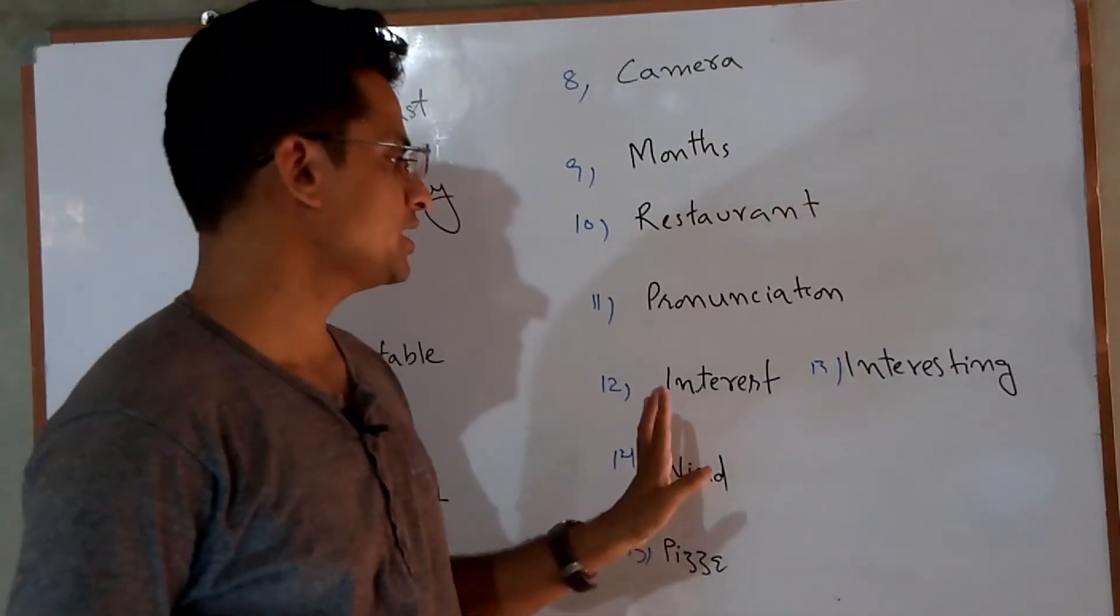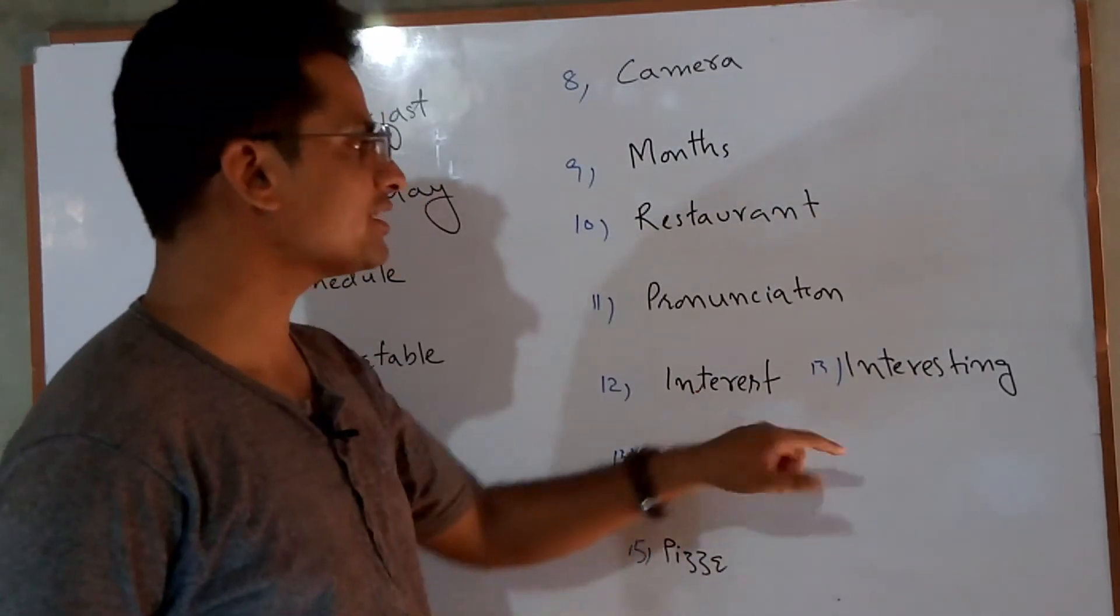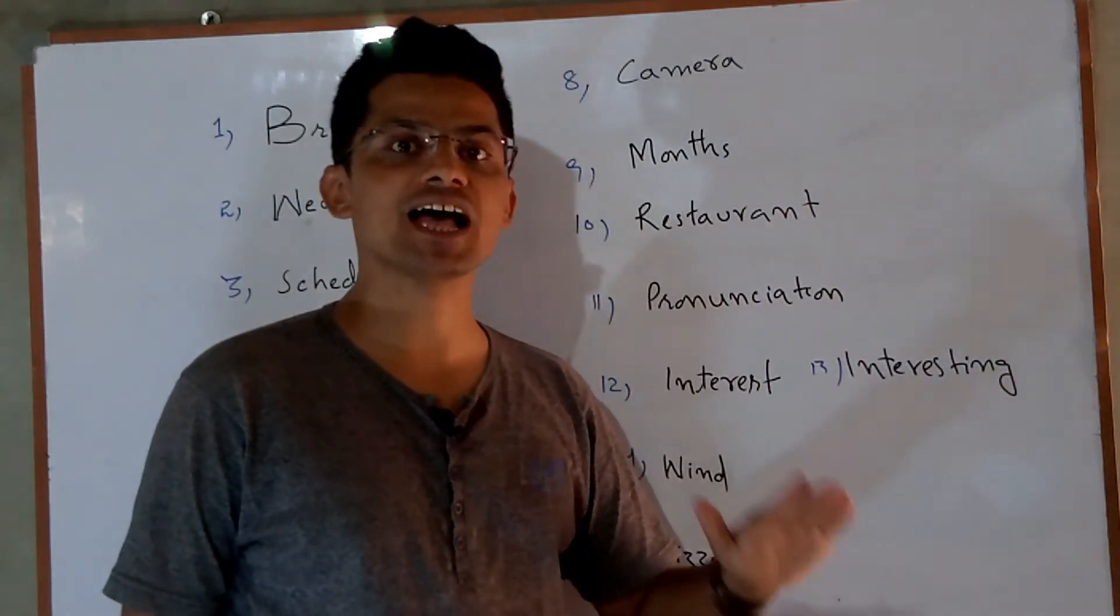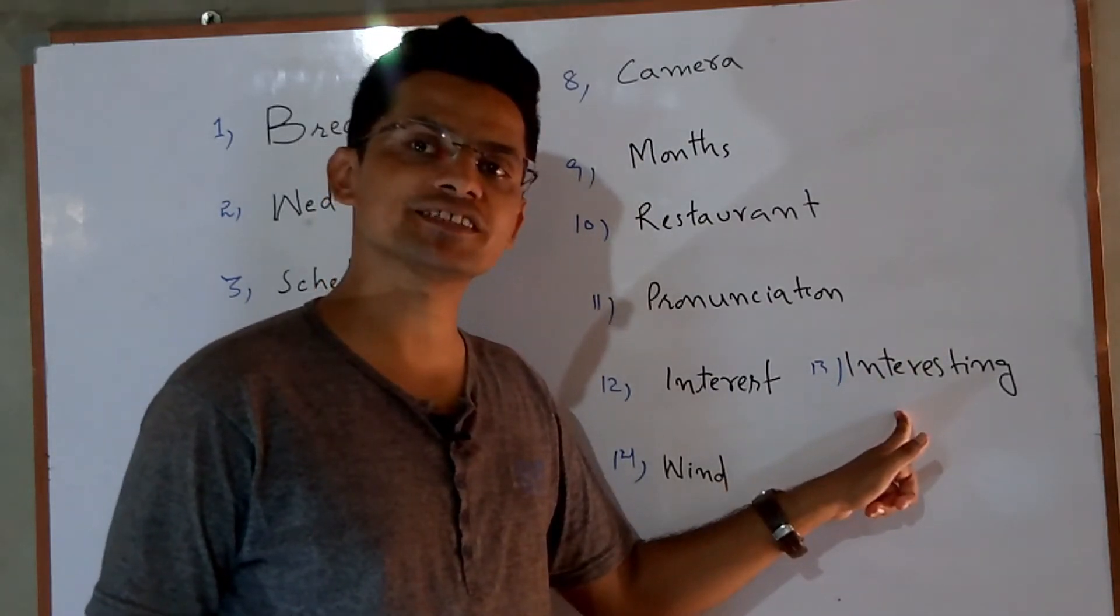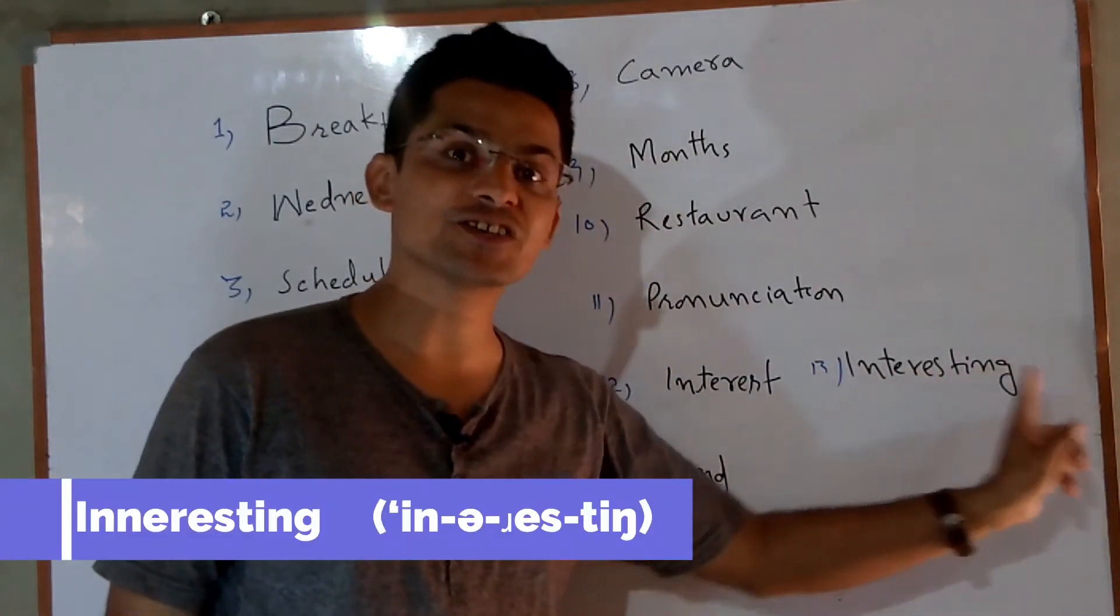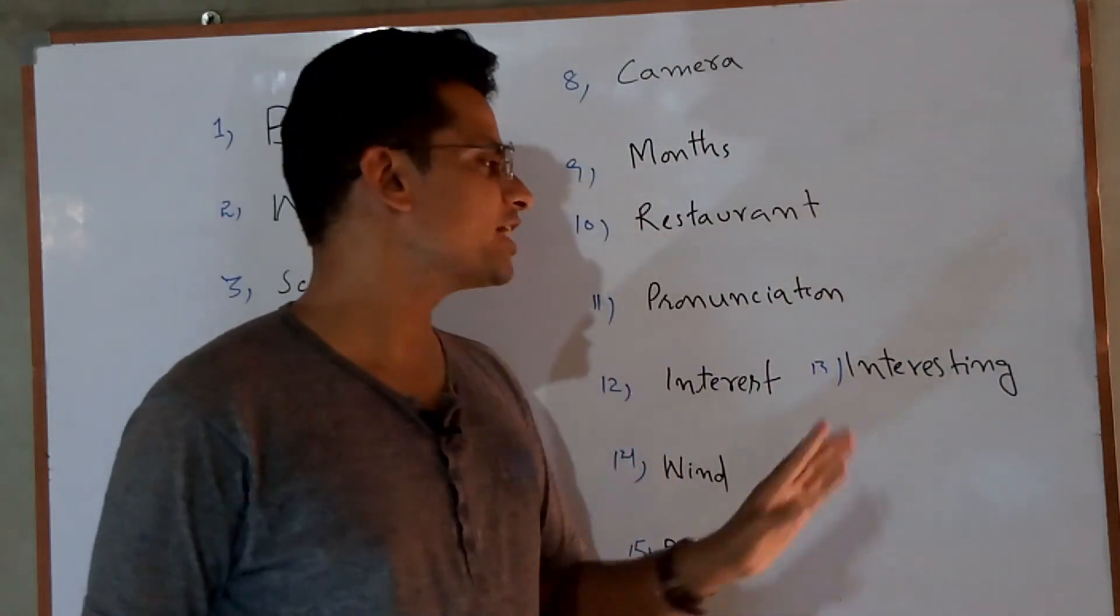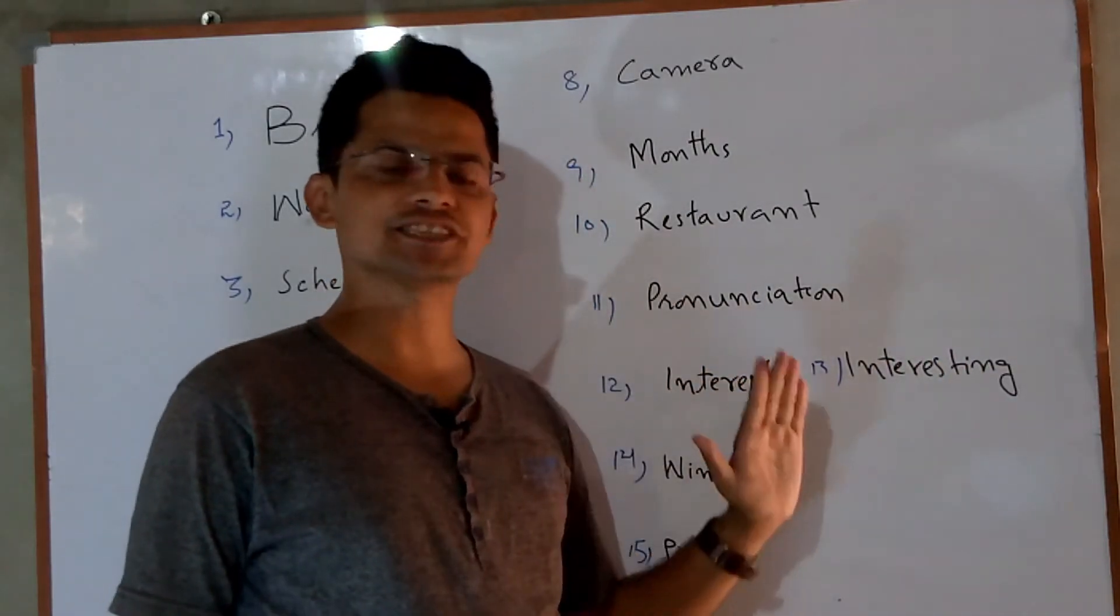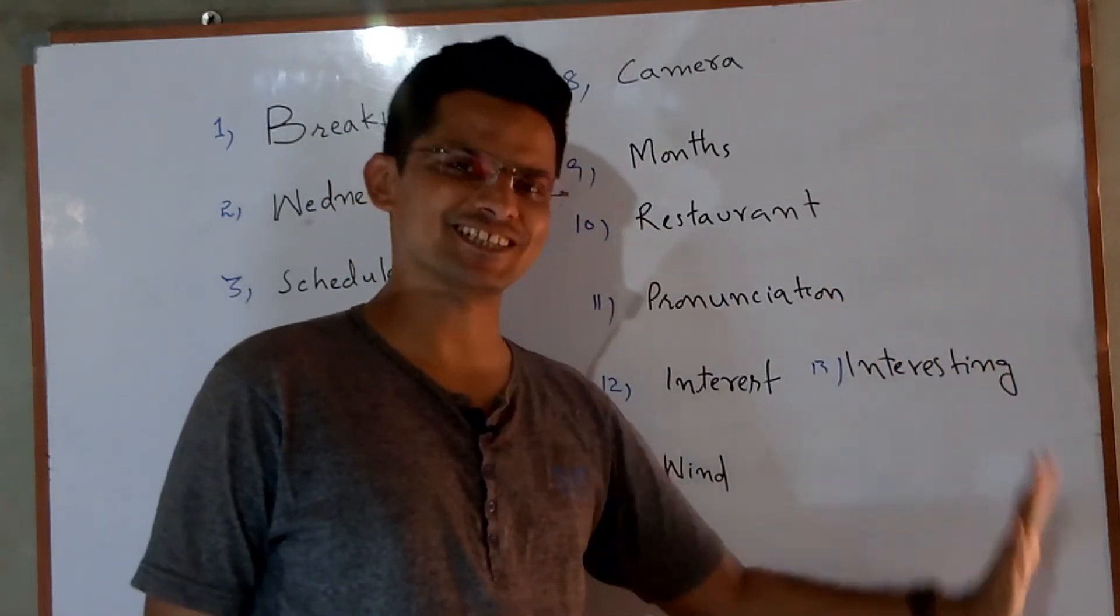The next word is interest. Two syllables. Interest means dilchaspi. As for interesting, interesting. Sometimes American native speakers give N to them and then pronounce it in-tresting, in-tresting. Interesting means dilchasp. Interest is dilchaspi, interesting is dilchasp.